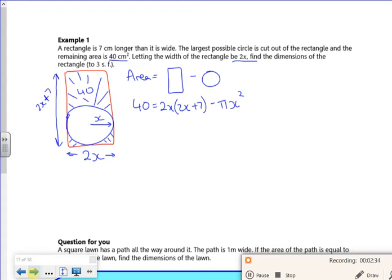So if we do a little bit of rearranging, I've got 40 is 4x squared plus 14x minus pi x squared. Now the pi is going to cause us a bit of an issue, but it's not going to cause us much. So I've got a 4x squared, I've got a minus pi x squared, I've got a 14x and I've got a minus 40. I'm going to clump these together because what I'm aiming towards is to use poly on my calculator.